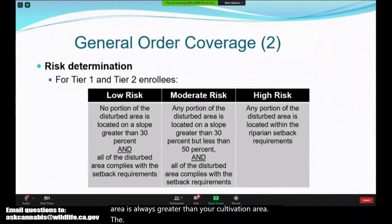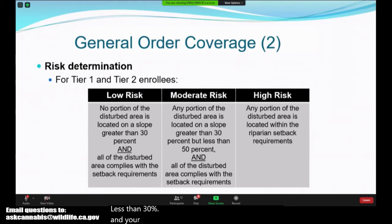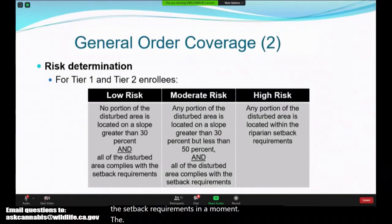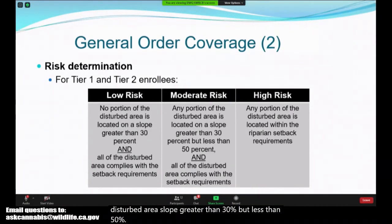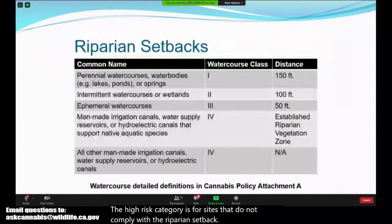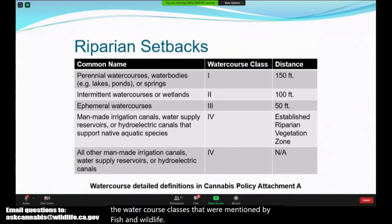The other facet of general order coverage is the risk determination. For low risk, sites have a disturbed area located on a slope less than 30 percent and outside of the riparian setbacks. The moderate risk category is for sites with a disturbed area slope greater than 30 percent but less than 50 percent, while still complying with riparian setback requirements. The high risk category is for sites that do not comply with the riparian setback requirements. These riparian setback requirements are similar to the watercourse classes mentioned by fish and wildlife with perennial, intermittent, and ephemeral watercourses.